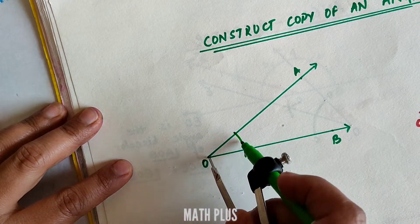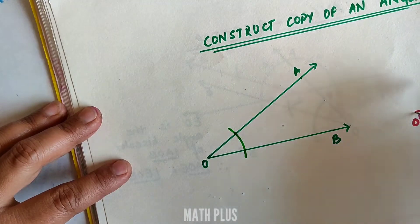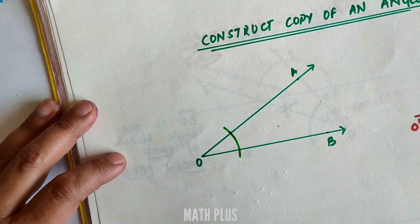Now we draw an arc keeping at O and O'. The arc has to be of the same radius. We get two points here, C and D.